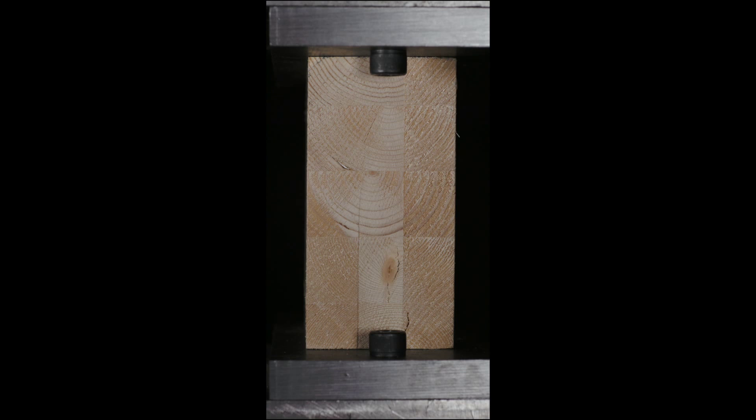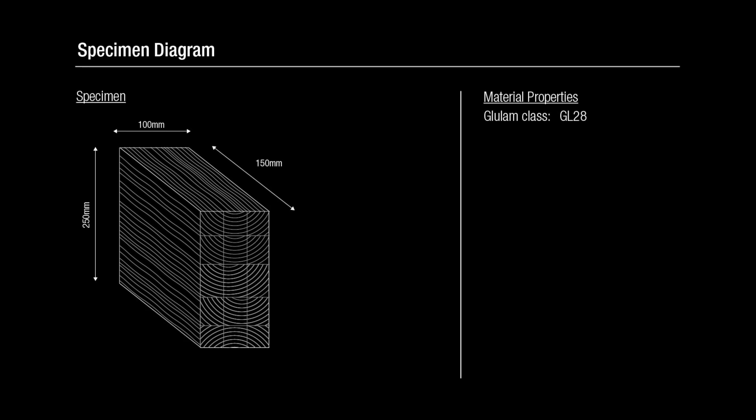This video shows a standard test on a timber specimen compressed perpendicular to the grain. This type of test is a standard European test for timber characterization. The timber used in the test is Glulam GL28.